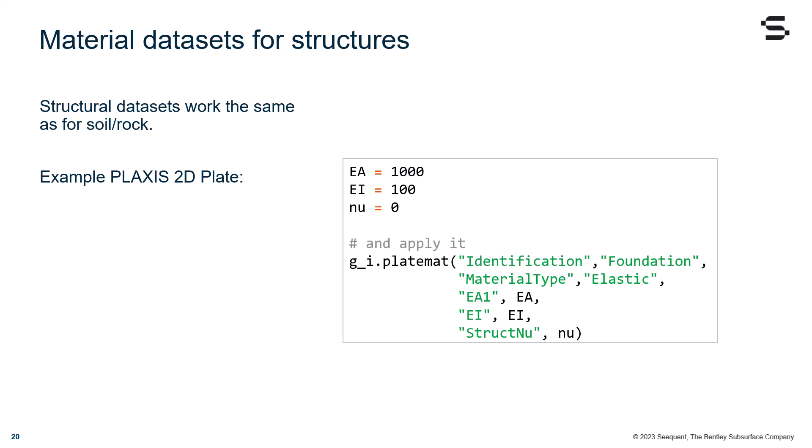you can see an example of a PLAXIS 2D plate material. At the bottom of the code, you can recognize the platemat command and all the properties defined. In this case, I simply added the values of the various properties via already defined variables, as this is typically something that can vary in your projects.